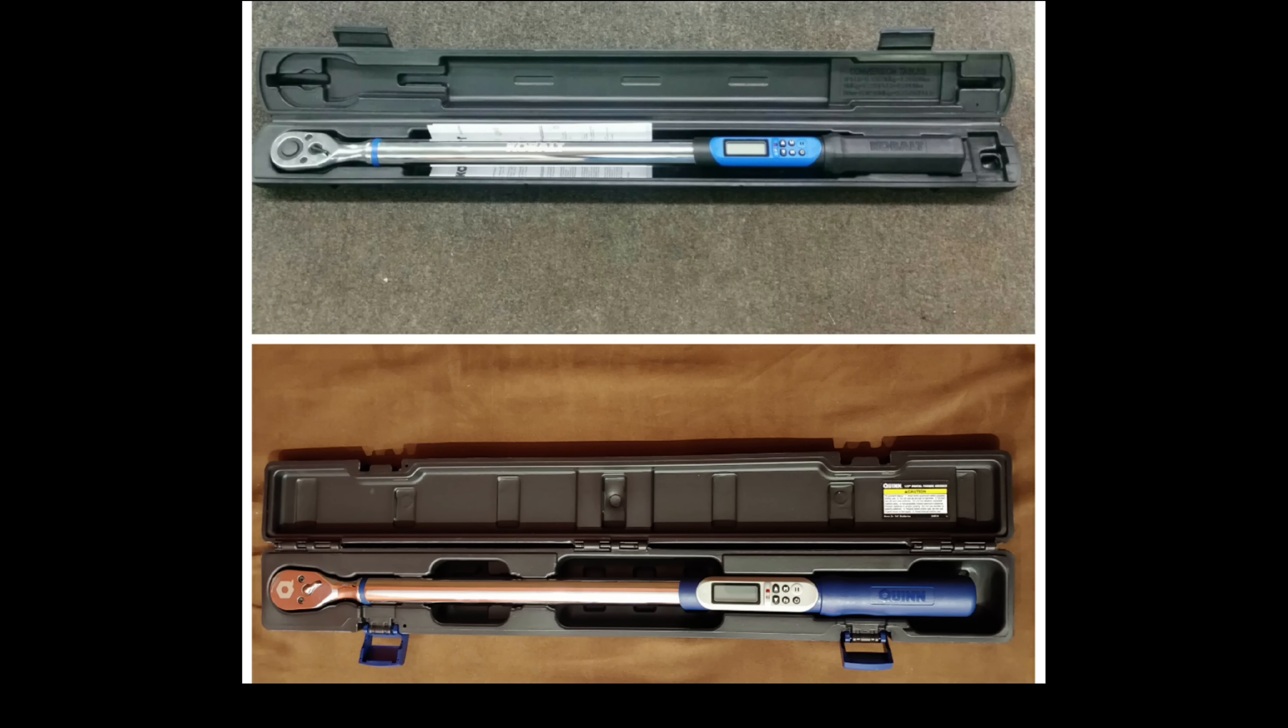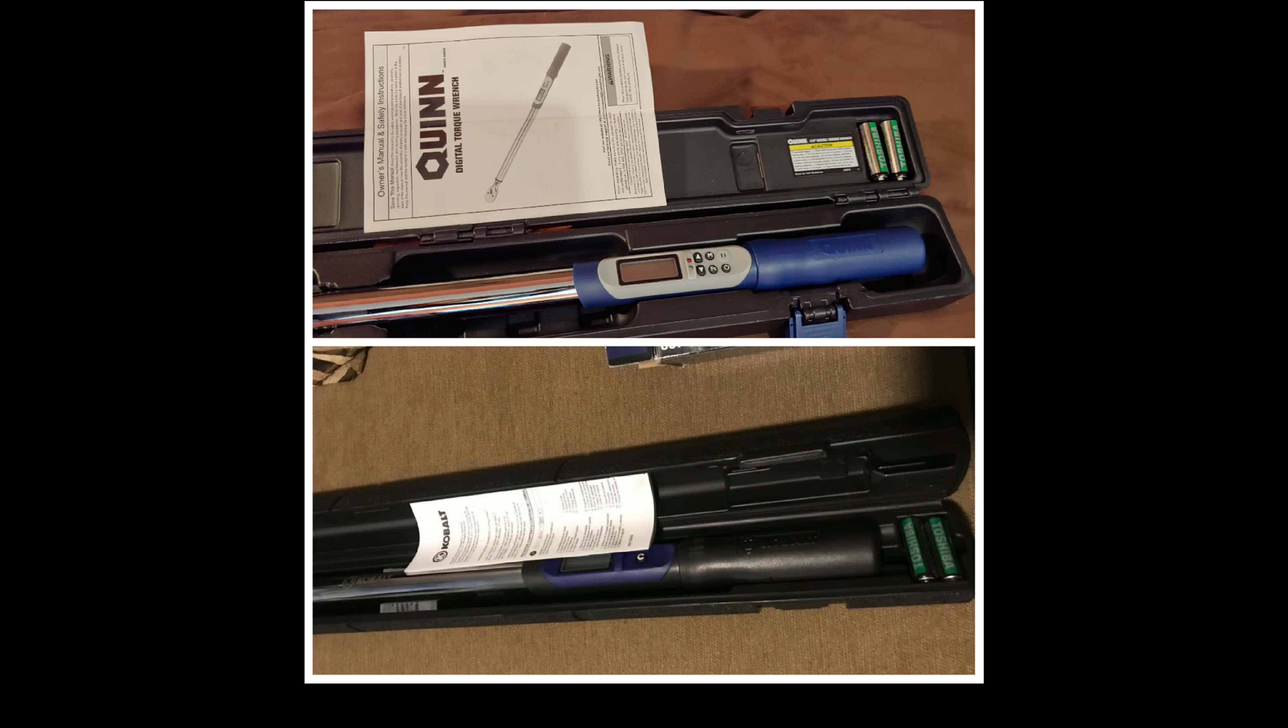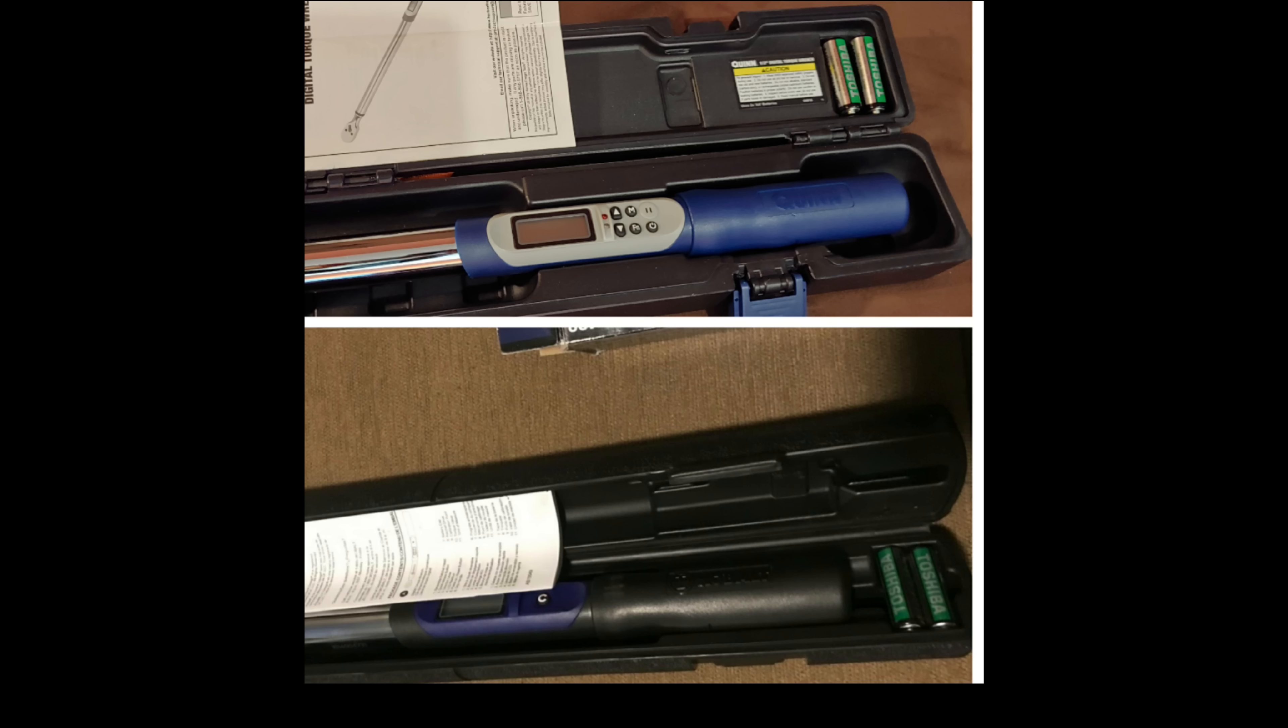Looking at these torque wrenches side by side you can see that the better case is definitely on the Quinn product. It has hinges and it's just going to hold up better over time. The fit, finish and feel of these as well as the electronics is nearly identical. On a closer look you can even see that they use the same Toshiba batteries to power them, which are two double A batteries.